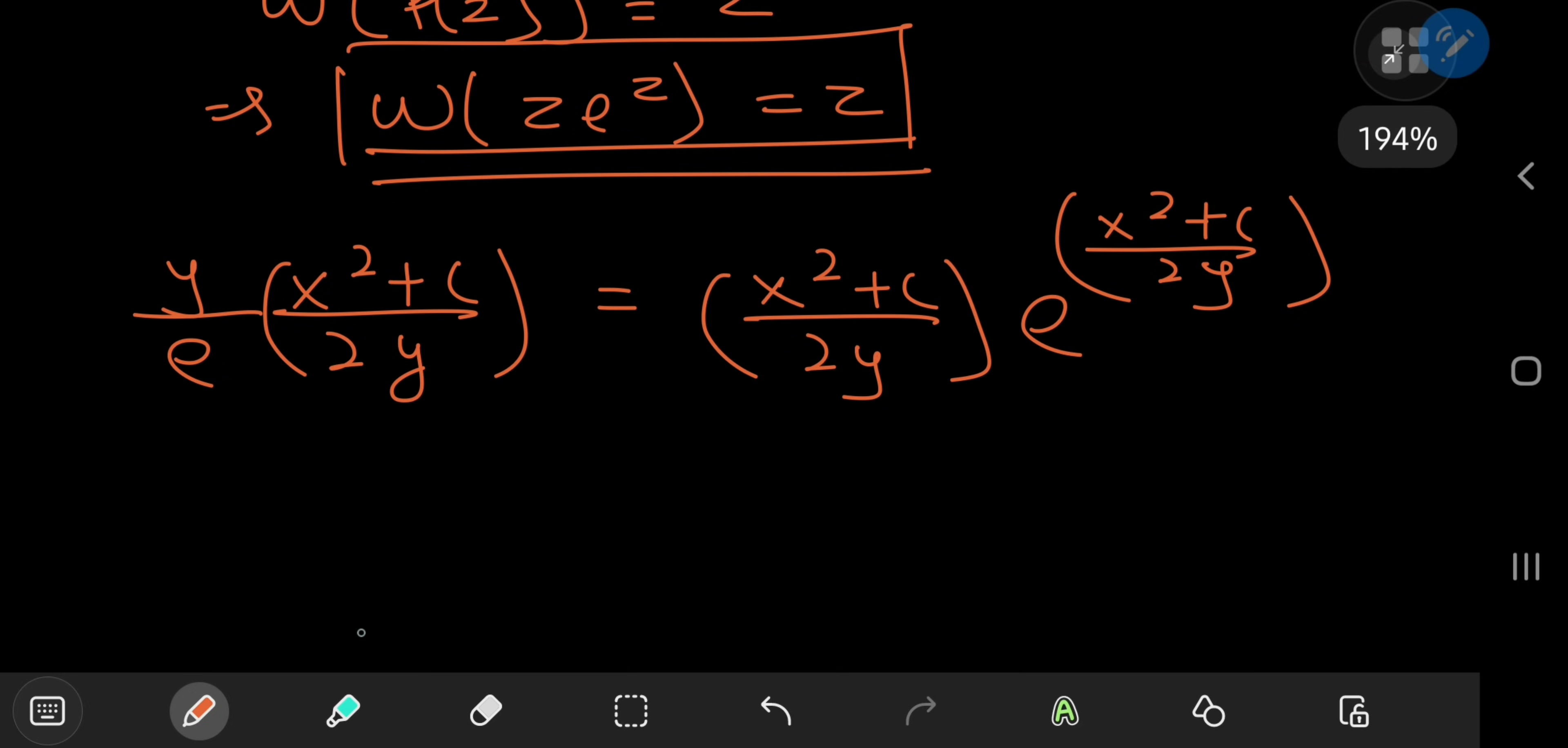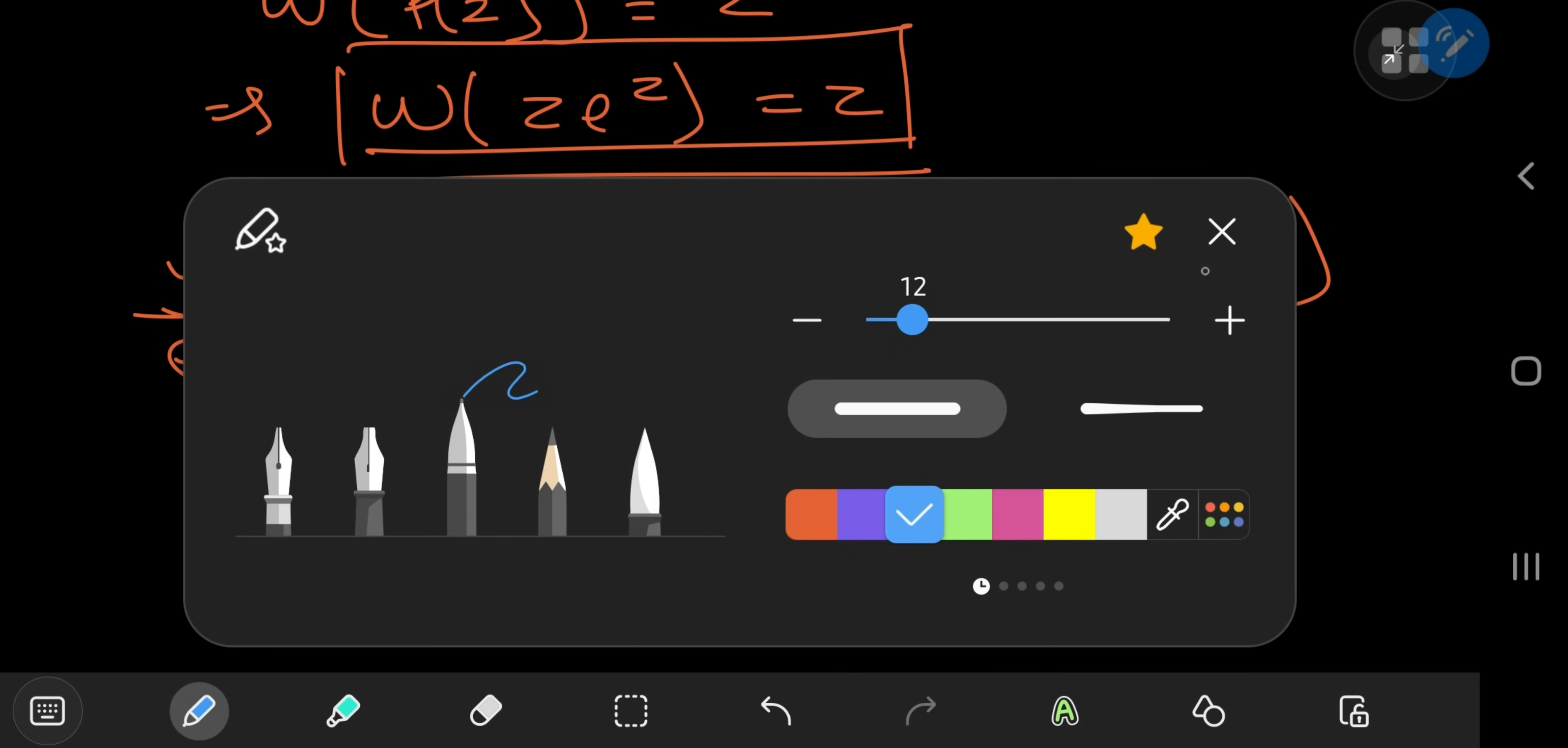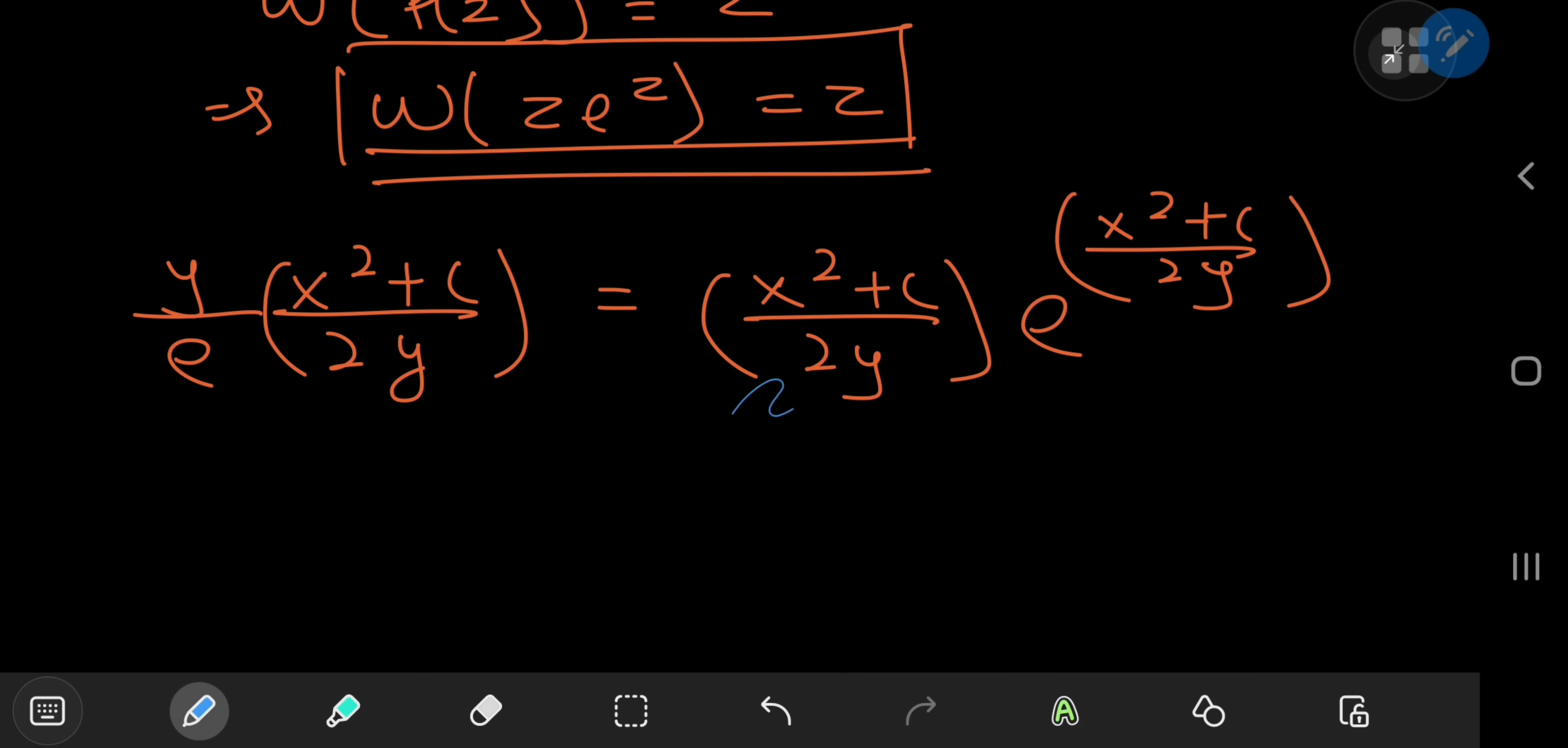So that means if I apply the Lambert W function to the equation, what I get on the right hand side will be the argument (x squared plus c) divided by 2 times y. And here of course I've applied the Lambert W function with the y's cancelling out quite nicely and I have Lambert W of (x squared plus c) divided by 2 times e.